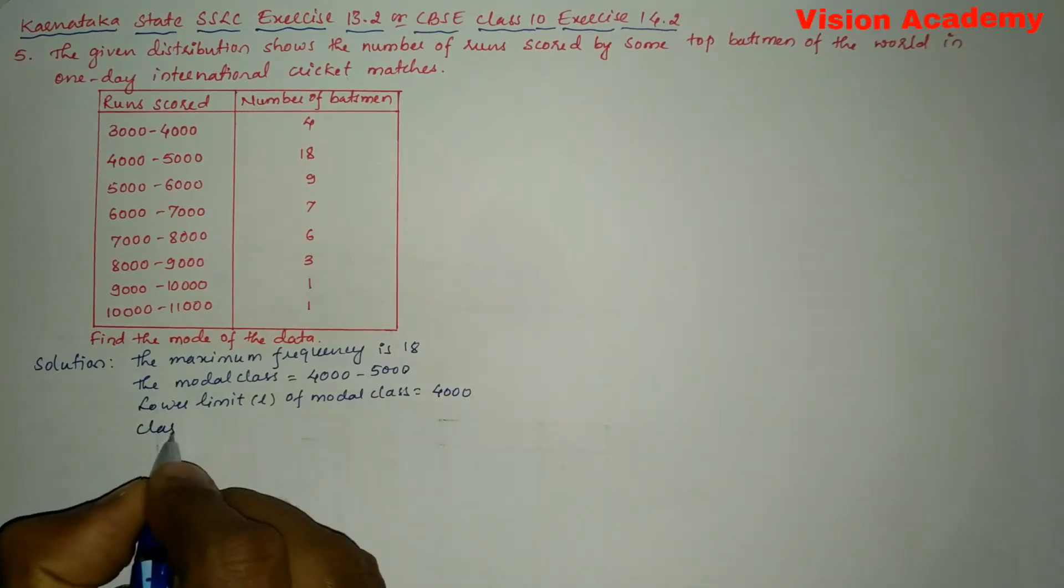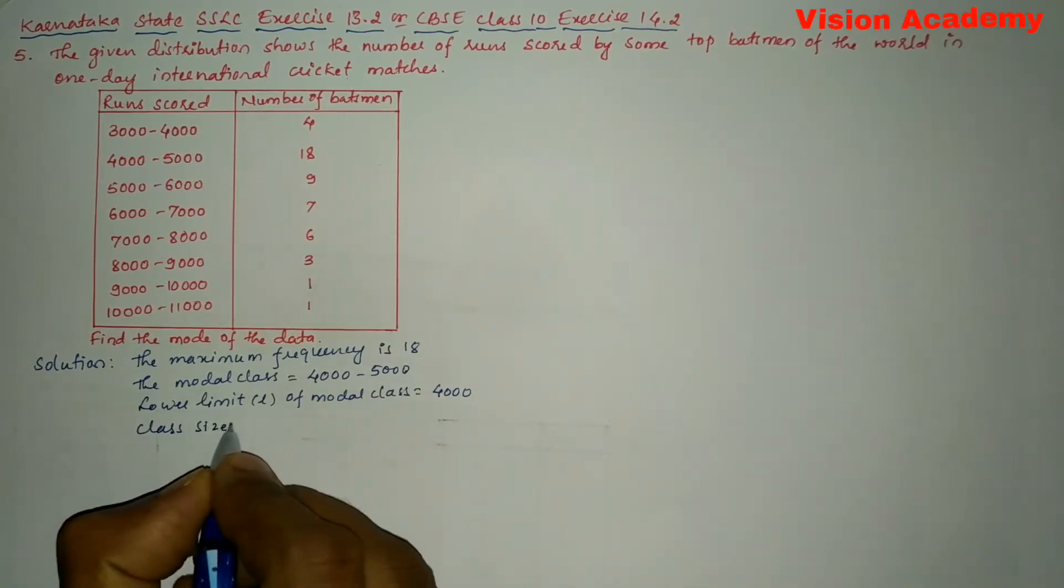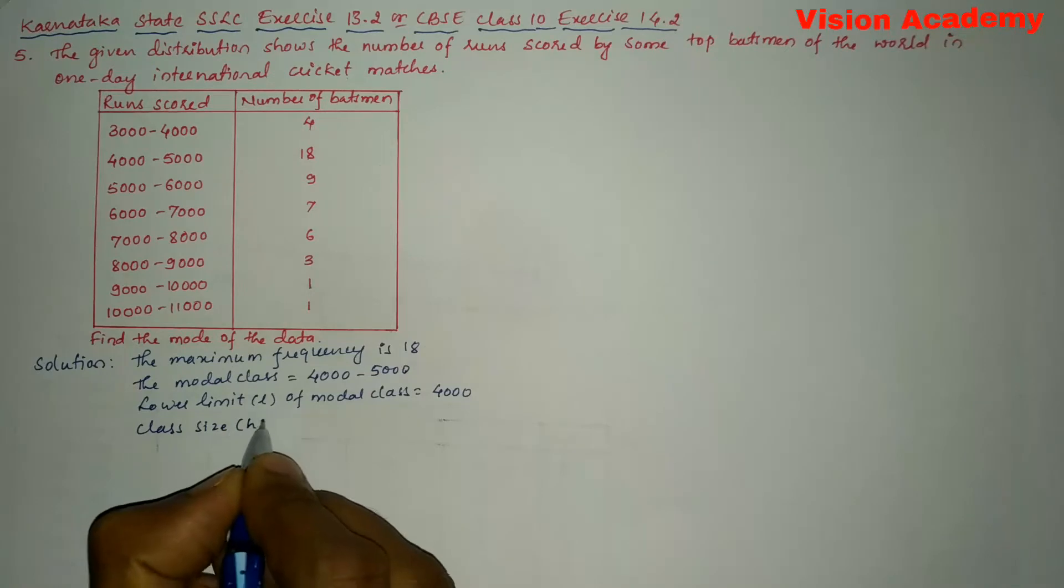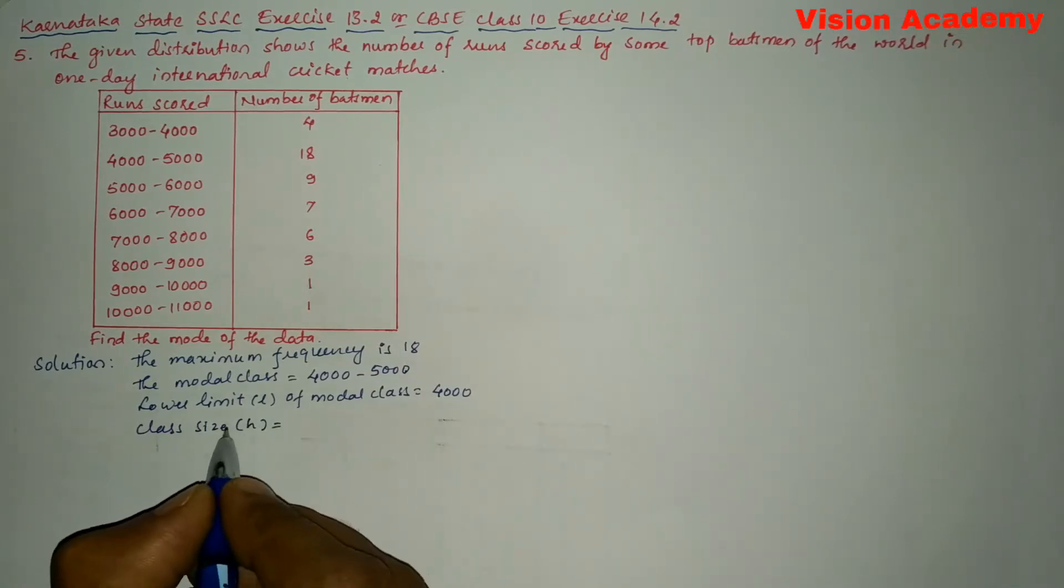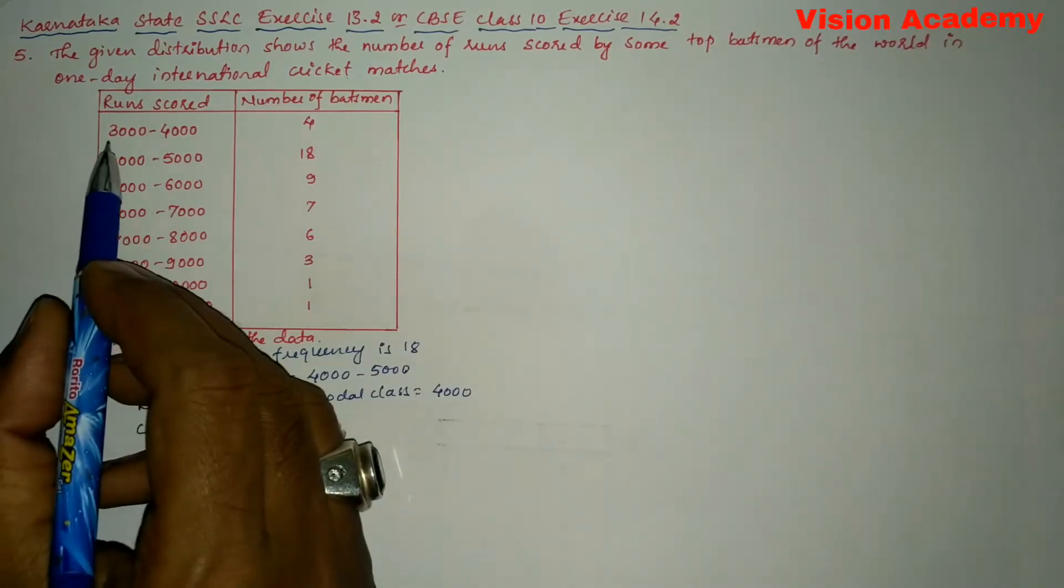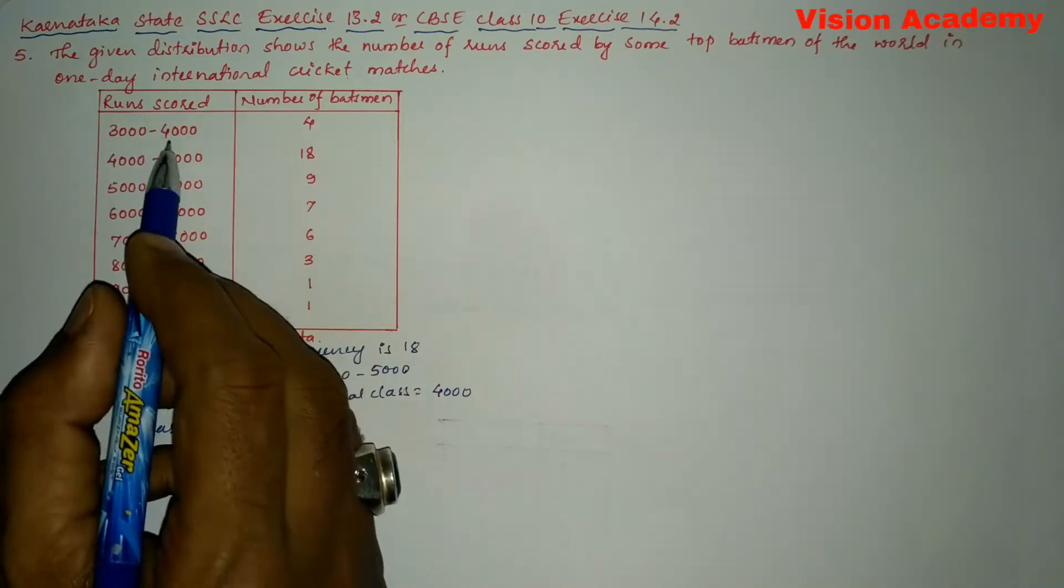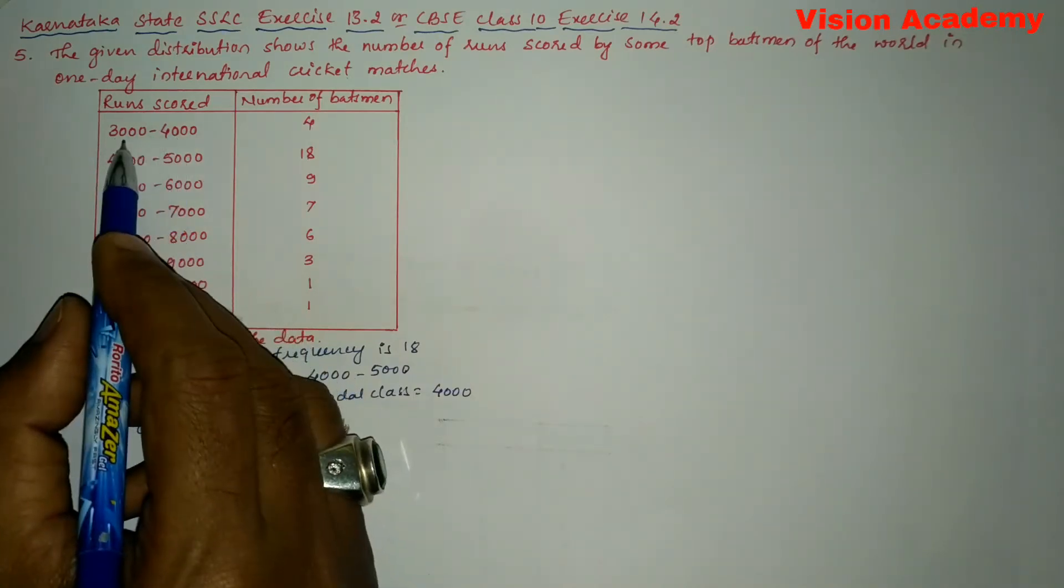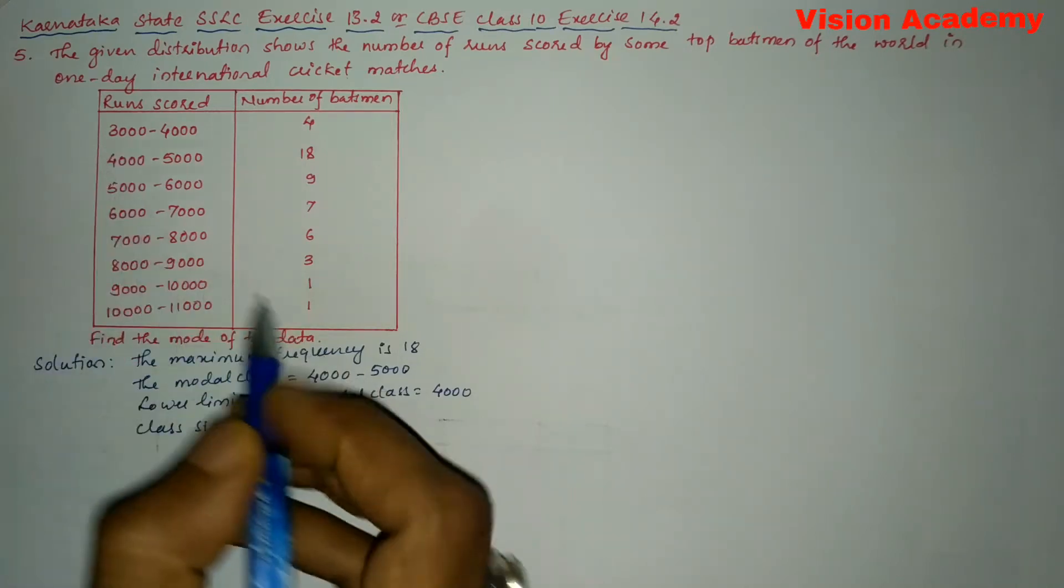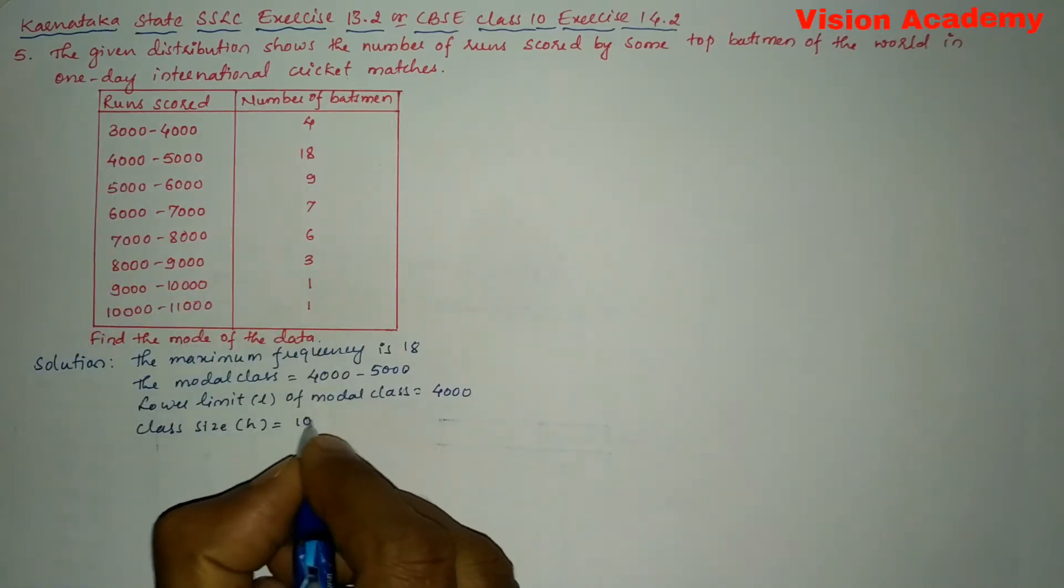Next we will write class size which is denoted as h. This can be determined by subtracting the lower class limit from the higher class limit, that is 4000 minus 3000 gives us 1000.